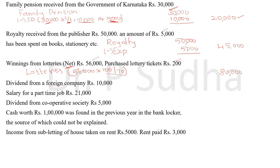Dividend from a foreign company is taxable. Write 'dividend from foreign company' in the particulars column and bring 10,000 rupees to the outer column. Next is salary for a part-time job. Whether you are a full-time or part-time employee, there is an employer-employee relationship, so this income will go to the head salaries — not income from other sources. We are putting a dash in the amount column.